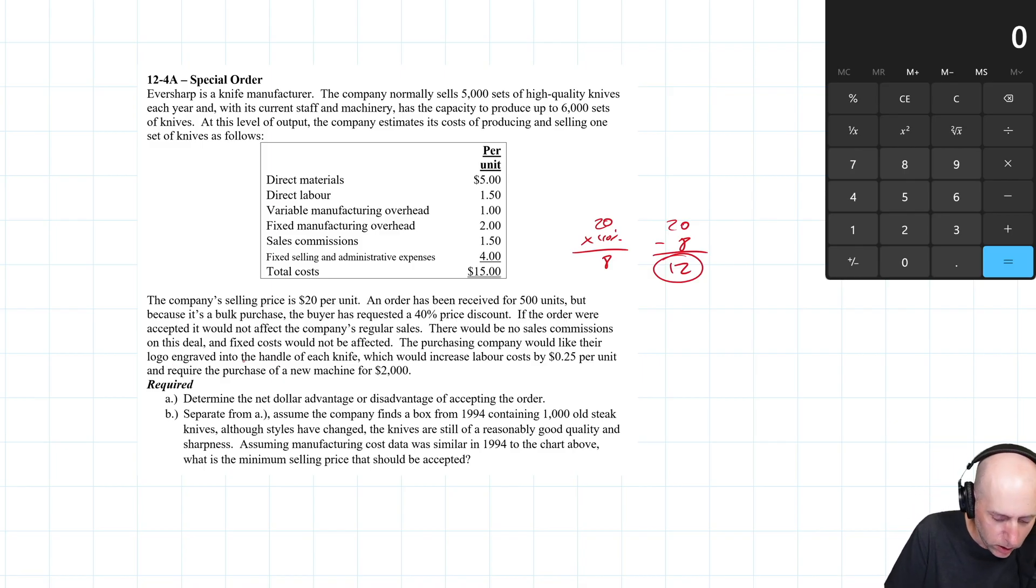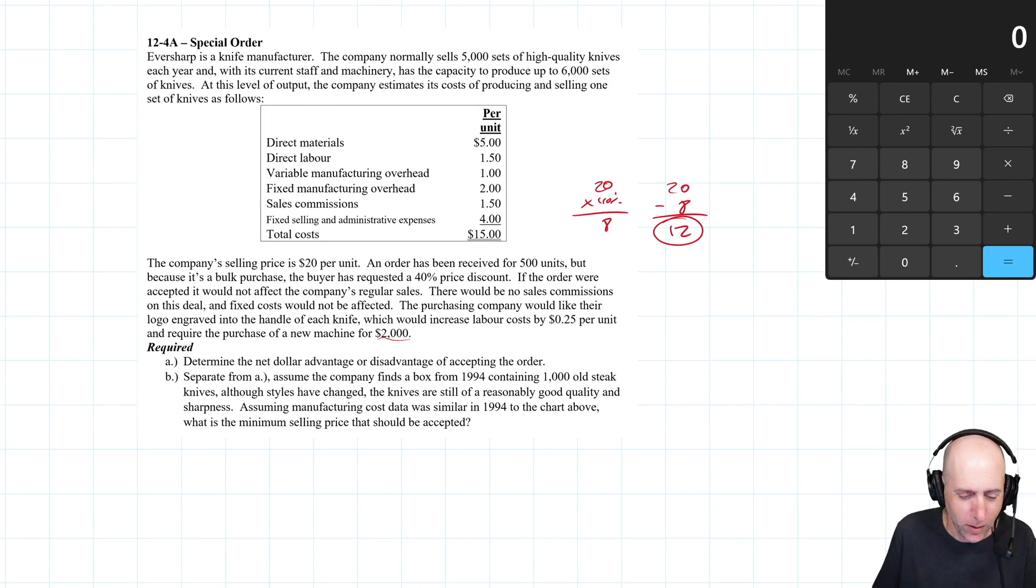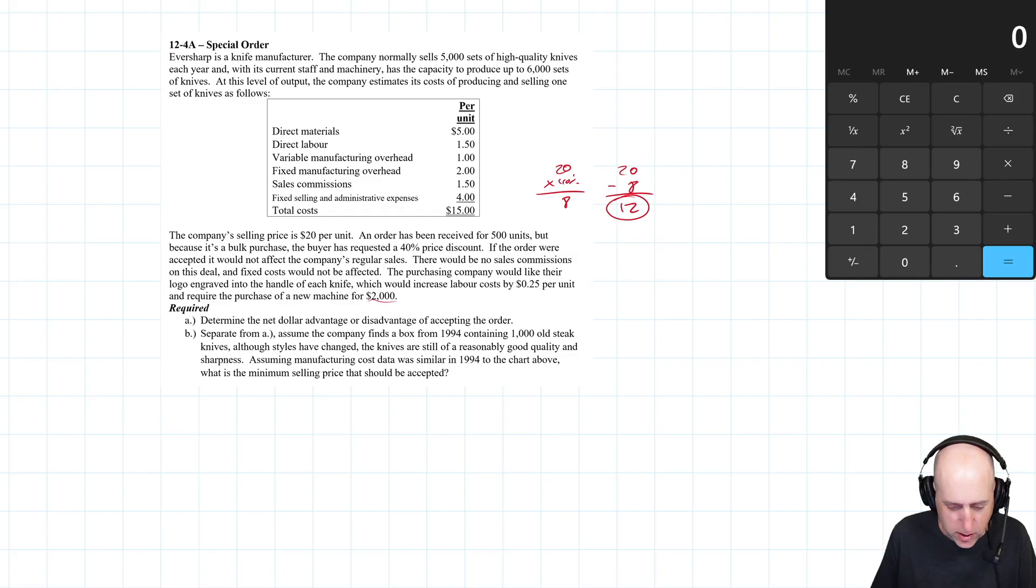The purchasing company would like their logo engraved into the handle of each knife, which would increase labor by 25 cents a unit. So labor is going up to a buck 75 and they would require a purchase of a new machine for engraving for $2,000. And saying crunch the numbers. So let's run these numbers. Let's start with just let's just do the relevant costs. Okay, so relevant costs and let's go down the line. Materials like almost always going to be relevant. I'll do per unit and also total for the order. So total for a 500 unit order and our material cost is $5 a unit and that is relevant. And why is it relevant? Well, if I take the order, I'm going to sell 500 more knives and I got to put in my material per knife. So there's more materials running through my company for sure. So that's $2,500 of material.